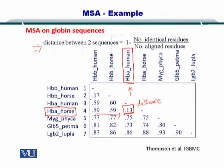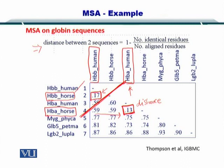HBB horse is also not very far from HBB human, as shown by a distance of 0.17. However, 0.13 is smaller, so HBA horse and HBA human are much more similar, while HBB horse and HBB human are a little less similar to each other. In this way, all of the distances listed in this distance matrix describe the difference between the corresponding sequences.